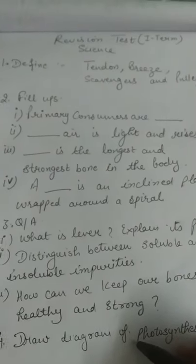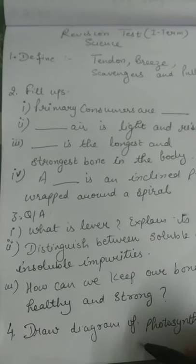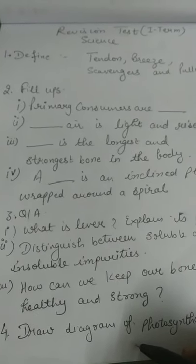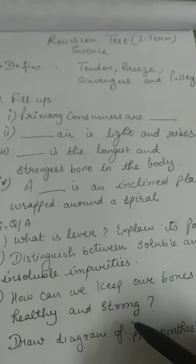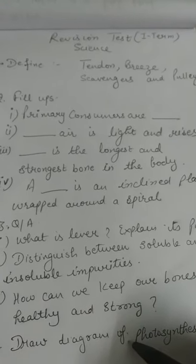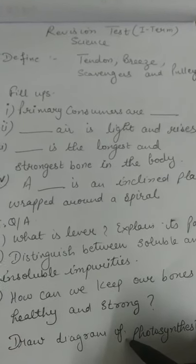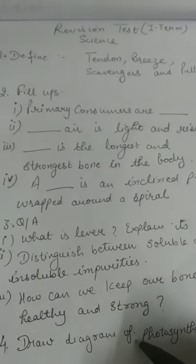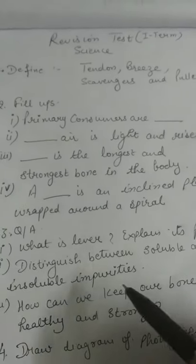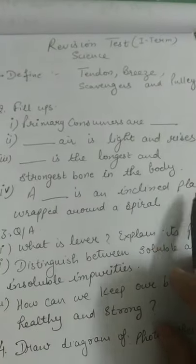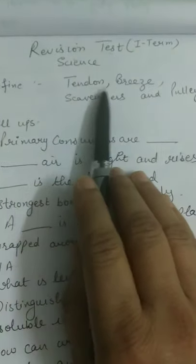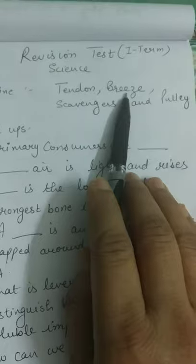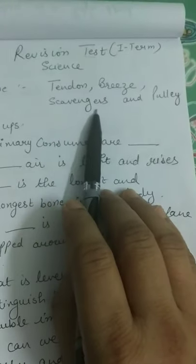I hope you are easily able to understand all four chapters of the first term. Now for the revision test, you will do it in your notebook without cheating. Note down the revision test for the first term. Define: tendon, breeze, scavengers and pulley.